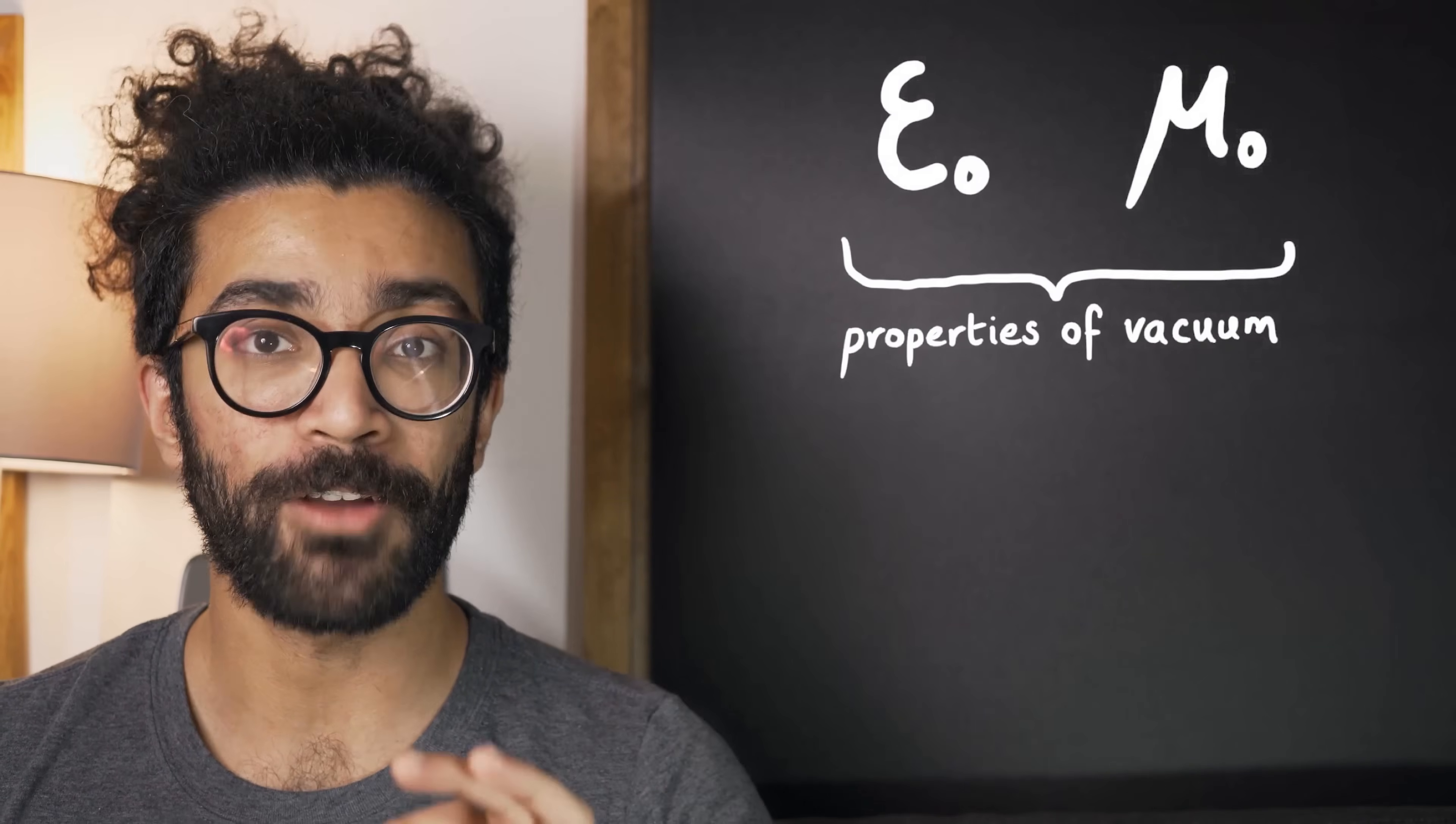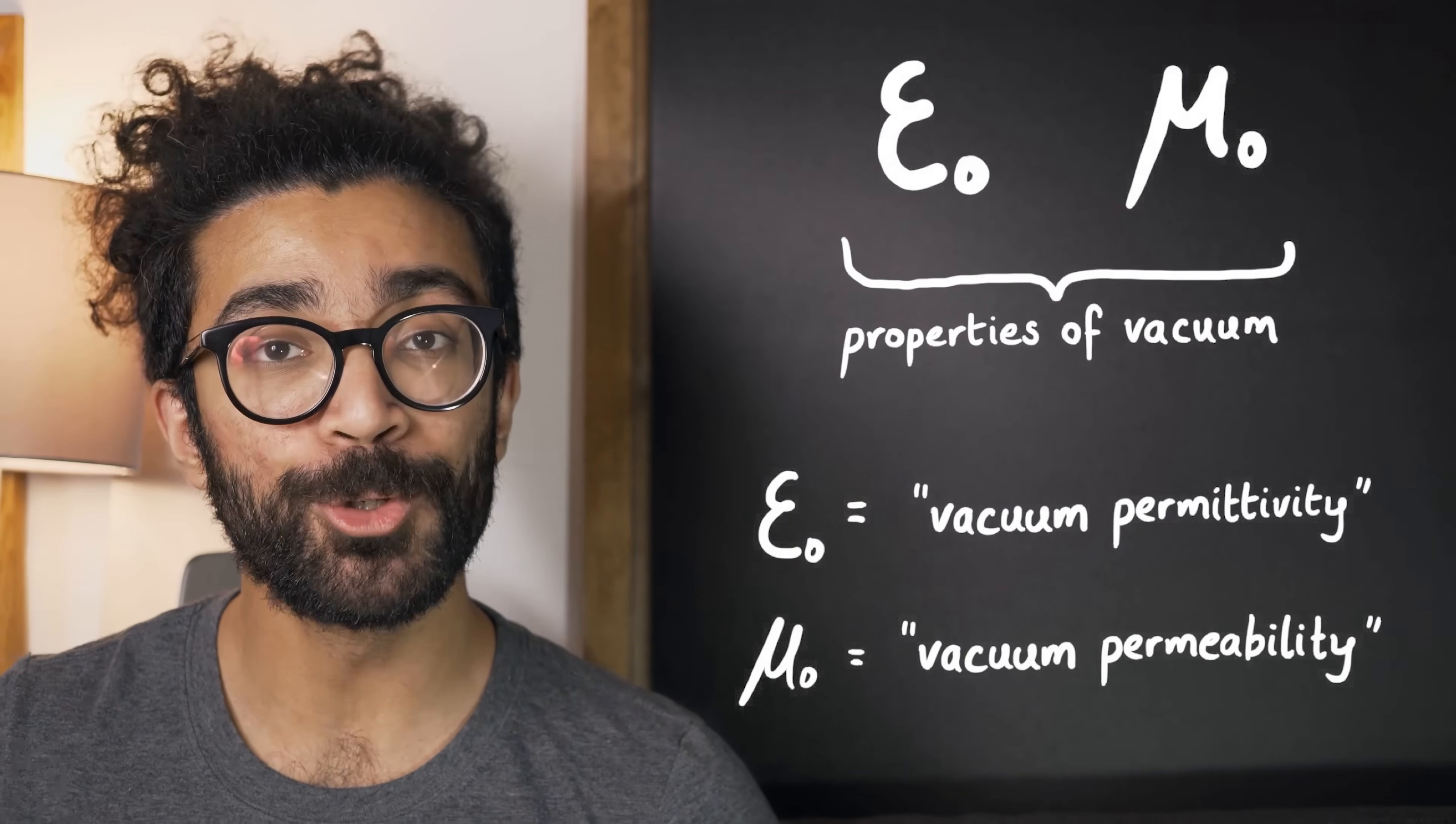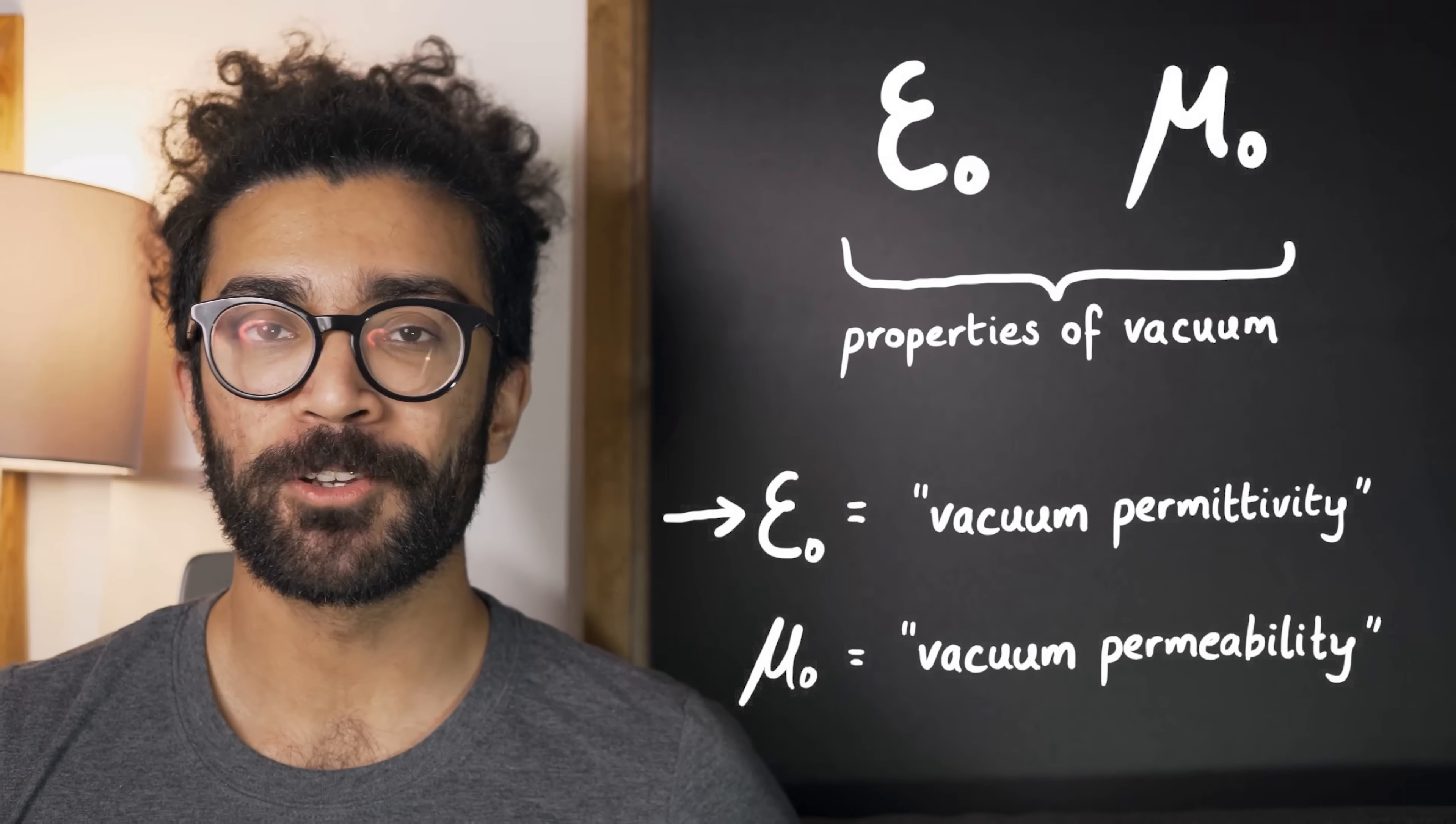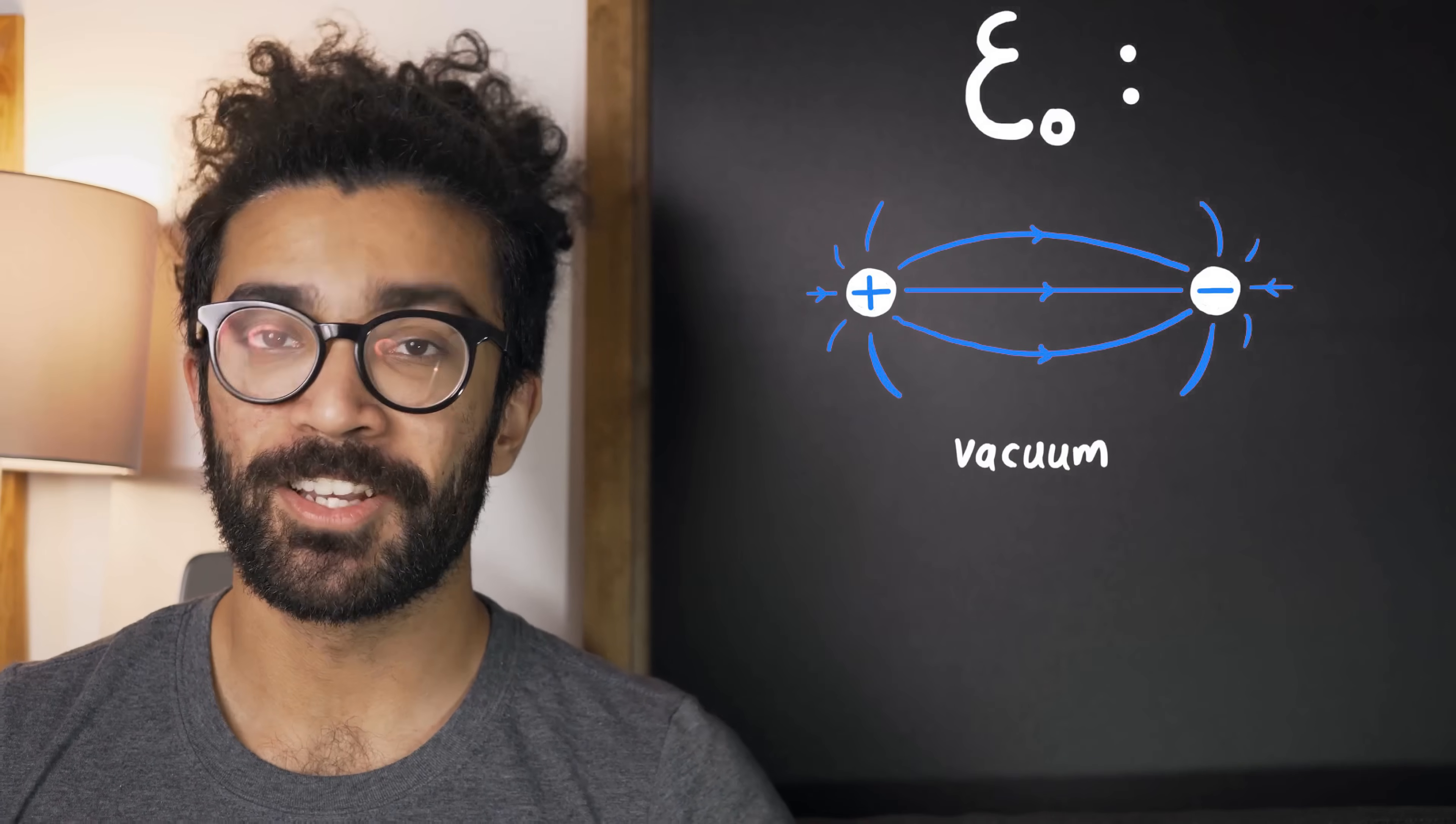Okay, so epsilon 0 and mu 0 are both properties of empty space, or of a vacuum. Epsilon 0 is often known as the vacuum permittivity, and mu 0 is often known as the vacuum permeability. Let's focus on epsilon 0 first. Epsilon 0 is a measure of how well electric fields can permeate through empty space. Now that idea is nice to imagine, but it's not very practical mathematically.